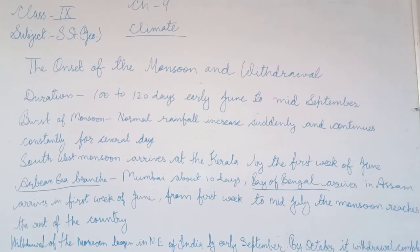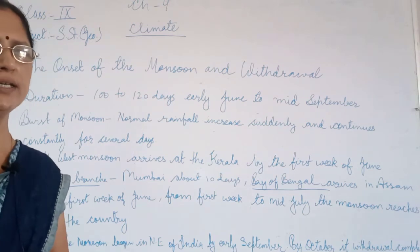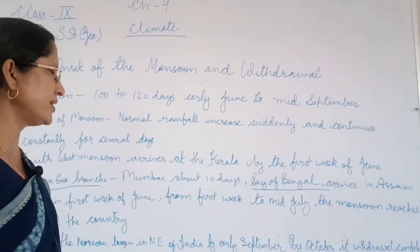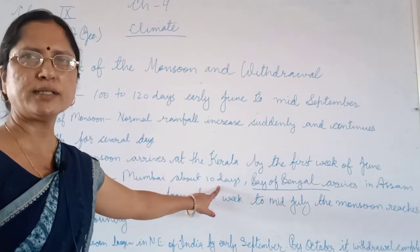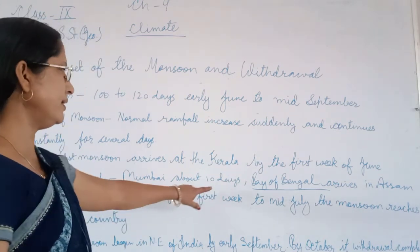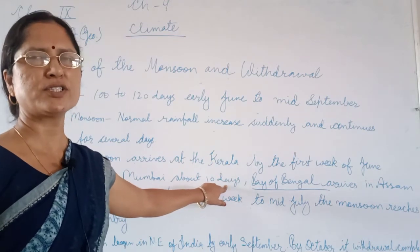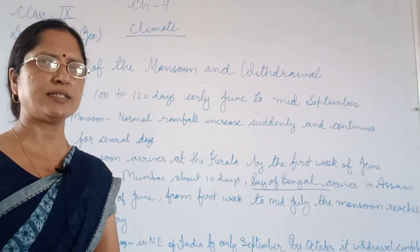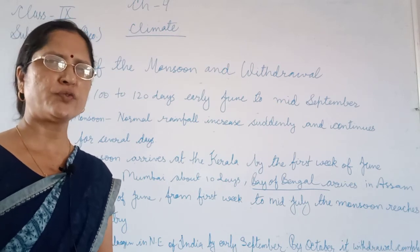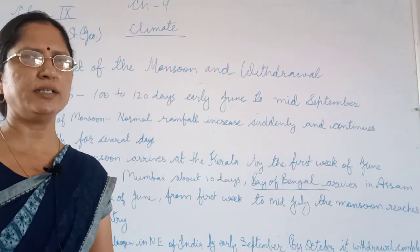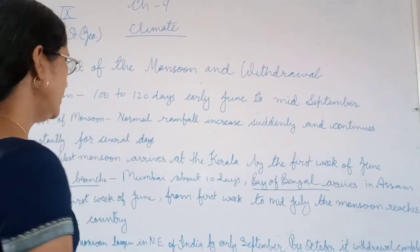The Arabian Sea branch reaches Mumbai in about 10 days. So from Kerala, the monsoonal winds take approximately 10 days to reach Mumbai — that is around 15th June. After that, it slowly advances to Gujarat and Rajasthan, reaching the rest of northern India, the plateau region, and middle India by the first week to mid-July.